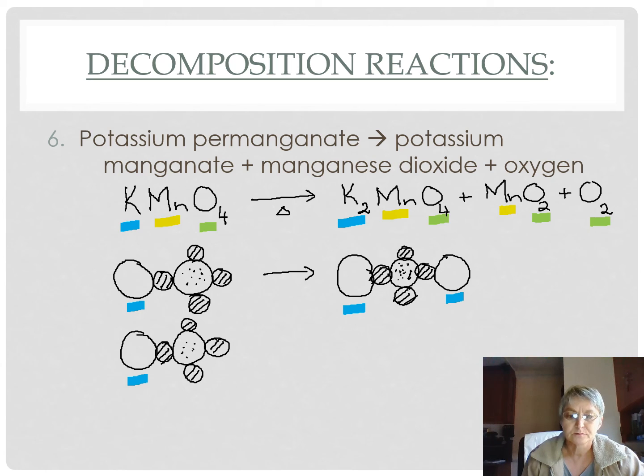Then, we also need 2 manganese. And it is joined to 2 oxygens. So, it seems like we have sorted out our manganese problem. There's a manganese, there's a manganese. 2 of them on the left-hand side. 2 of them on the right-hand side.